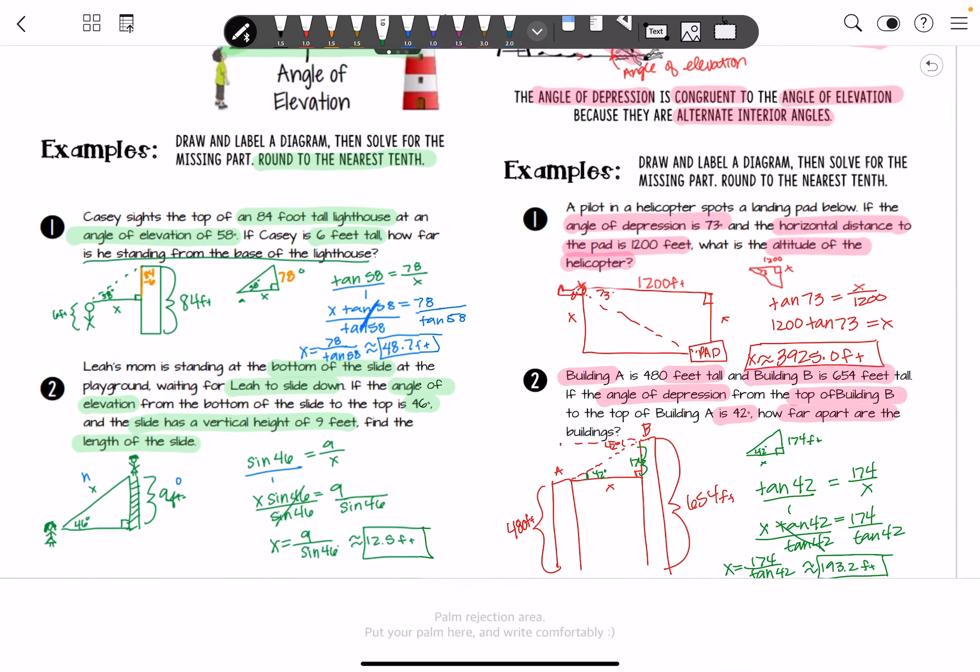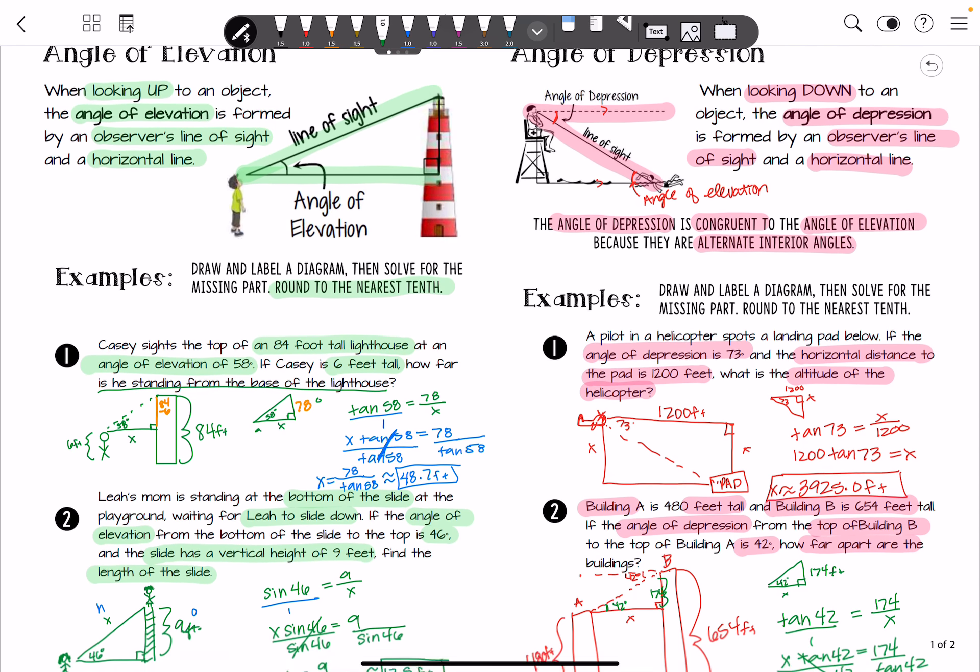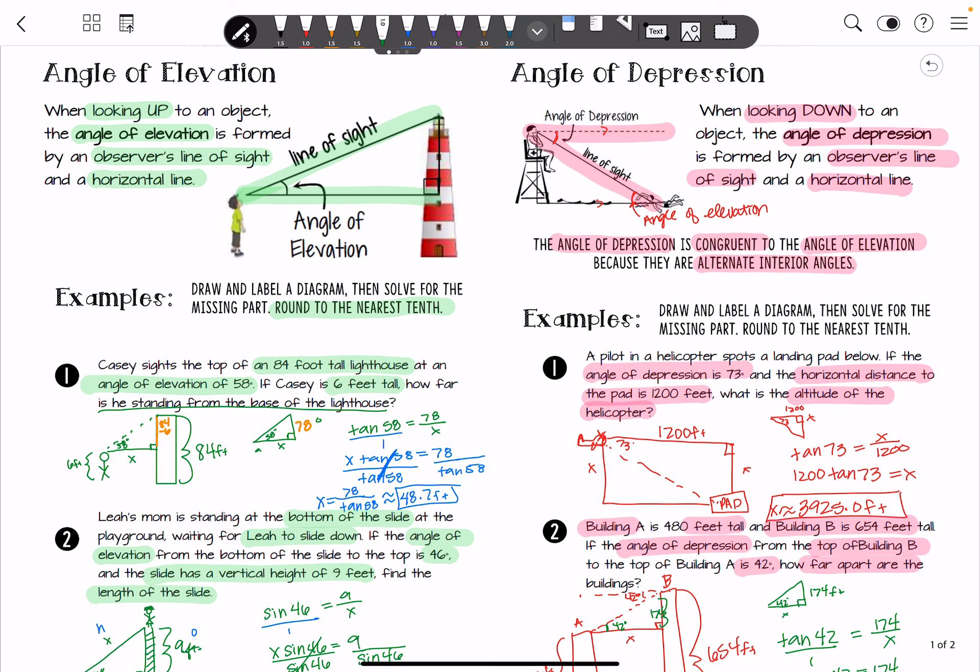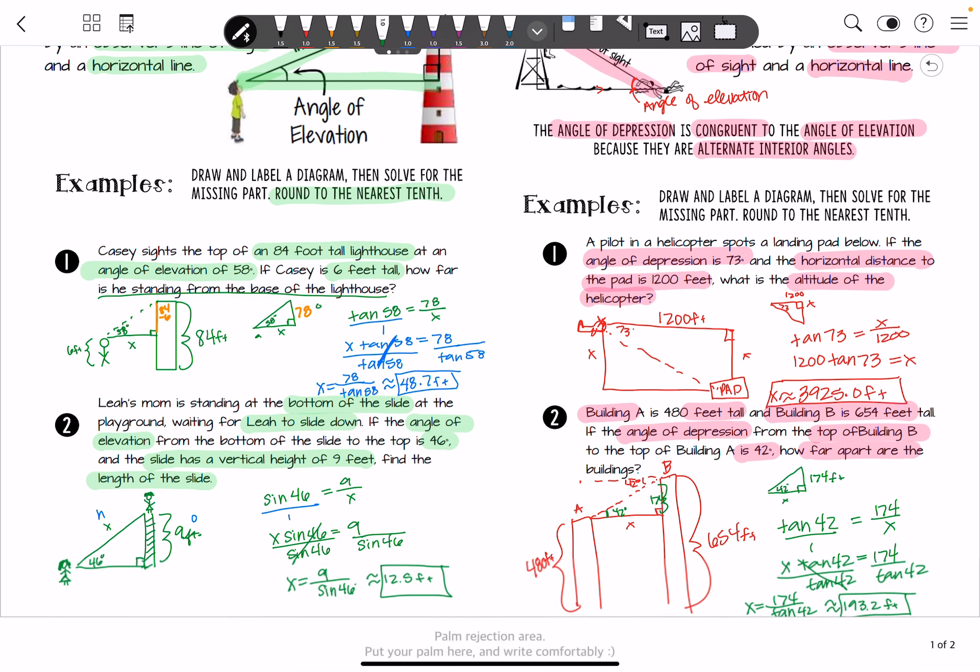And that's it. So this is how sine, cosine, and tangent are used in the real world. A lot of these things are used, for example, with the Tower of Pisa. They've used these types of angle measures to kind of help lessen that angle that it's leaning at. All right, thanks for watching.